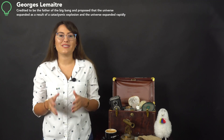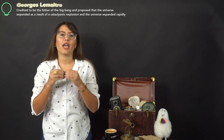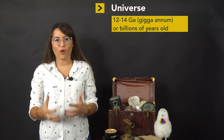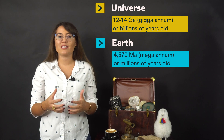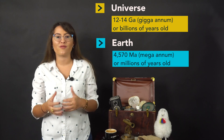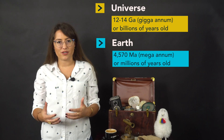As a result, tiny particles began grouping together forming atoms, and over time these atoms began coming together to form stars and galaxies. It is predicted that the universe is 12 to 14 giga annums, or billions of years old, with the Earth being approximately 4,570 mega annums, or millions of years old.